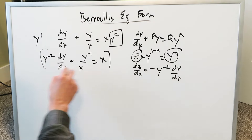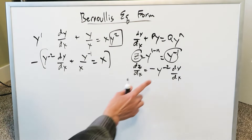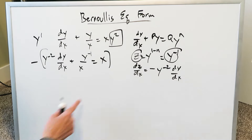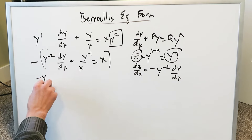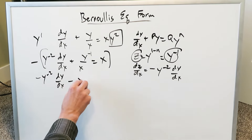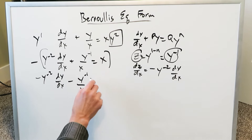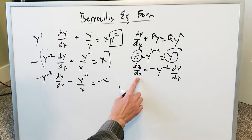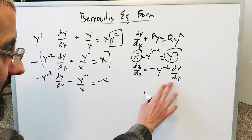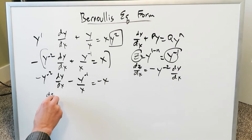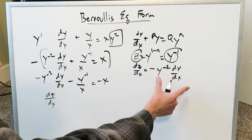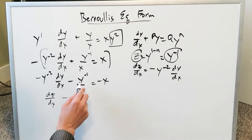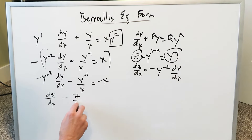This minus coefficient will affect everything across here, because when applied it allows you to bring in the substitutions. When you multiply through, you get minus y to the minus 2 dy over dx minus y to the power of minus 1 over x equals minus x. Now the substitutions come into play: the first term is exactly dz over dx, and wherever you see y to the minus 1 you substitute z. So you have dz over dx minus z over x equals minus x. Now you have your linear form.